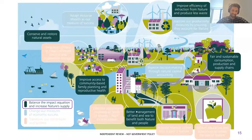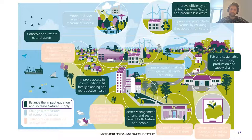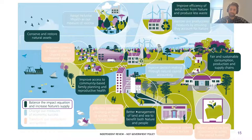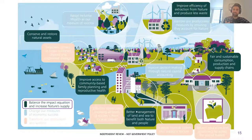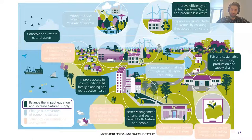Better management of land and sea to benefit both nature and people — thinking about nature-based solutions that, when done right, can help biodiversity and also help us deal with climate change. Additionally, to speed up the demographic transition, the review talks about the need to improve access to community-based family planning and reproductive health, to empower women worldwide and give them greater freedom in terms of family size choices.